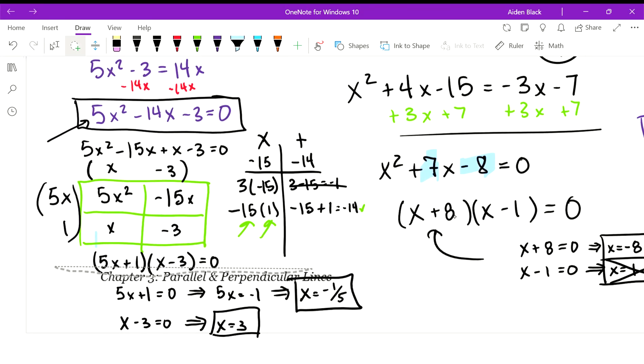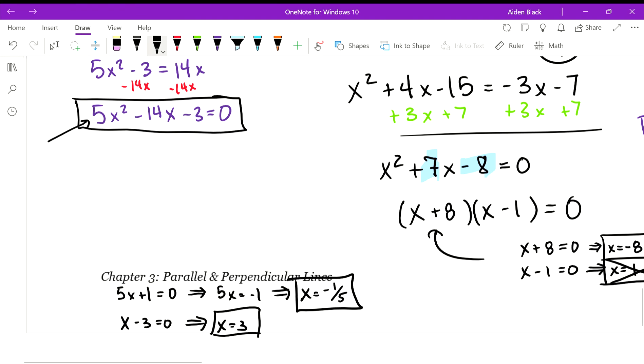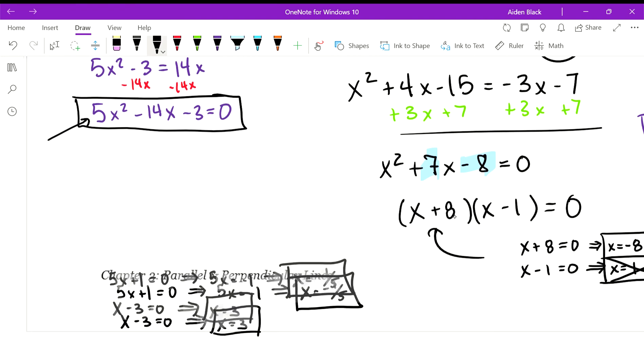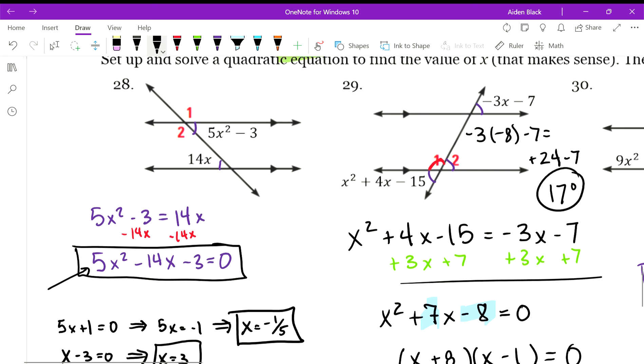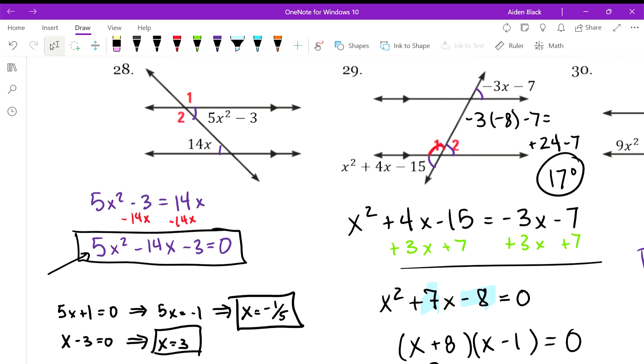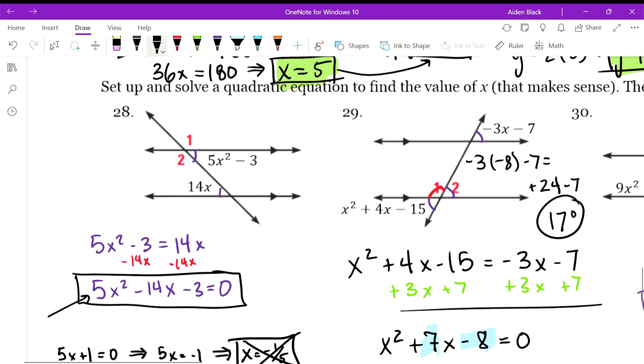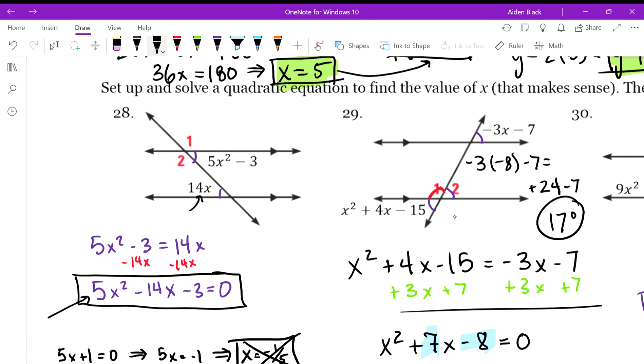If we plugged in -1/5 into 14x, we would get a negative value, so that's the one that won't work. So our solution should be 3. If I plug that in for 14x, I get 14 times 3. So we end up with 30 plus 12, should be 42. So we get 42 degrees.